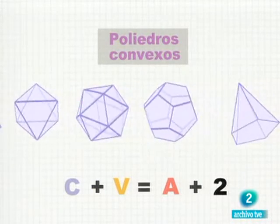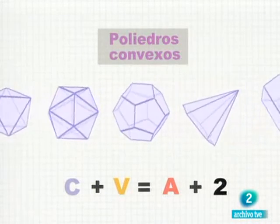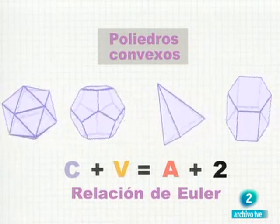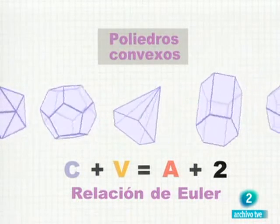A la relación, caras más vértices igual a aristas más dos, se la conoce desde hace más de 250 años como la relación de Euler.